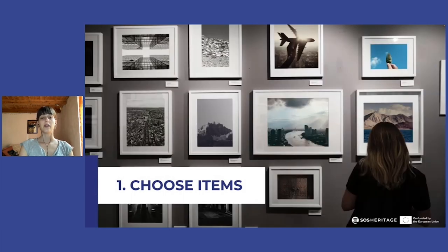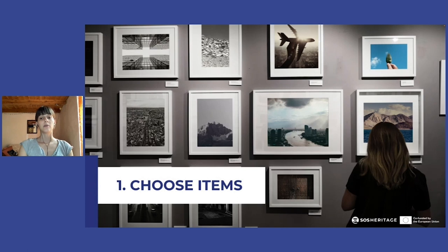The first step for creating a priority list is obviously to choose the objects that must be included. This may seem like the most trivial and easy step, but in reality, in our experience, it is the most difficult. This is the step in which a museum must decide which are the most important artworks of the collection. It is important to proceed step by step and to try to establish rules and logical criteria to avoid making an exclusively subjective and emotional choice.